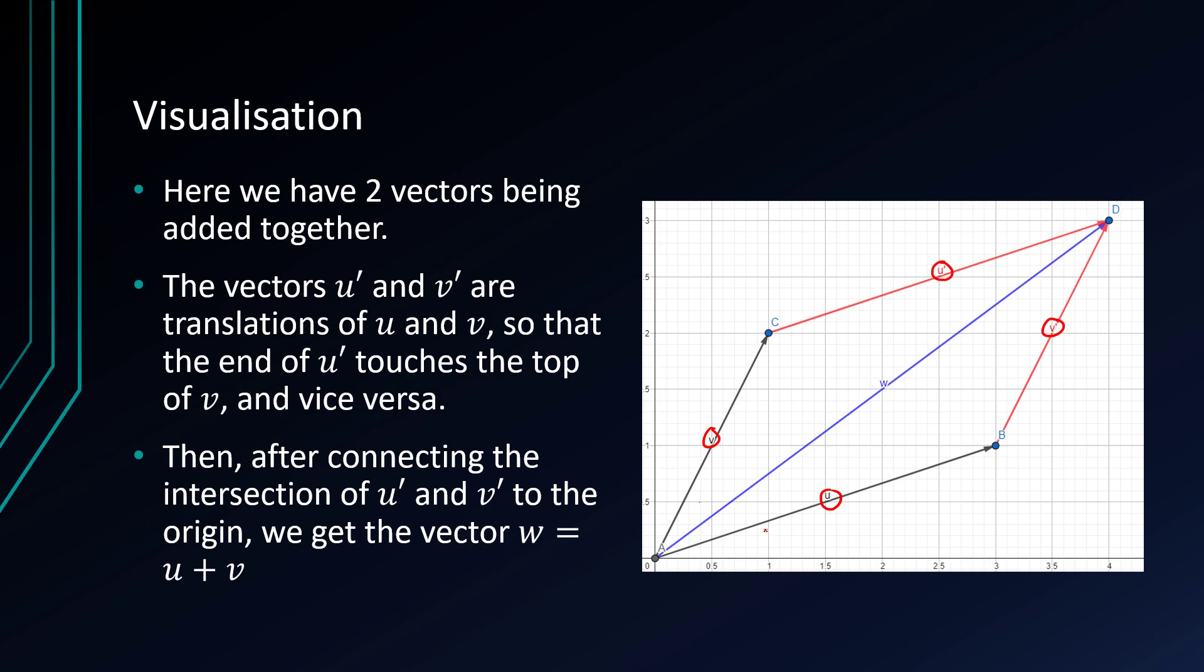So here the vectors look like a is 3i plus j and b is i plus 2j. So a plus b, or it should be u plus v, should be 4i plus 3j, which it appears to be. So that just proves that this method works.